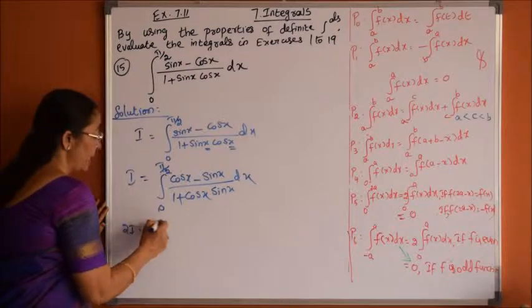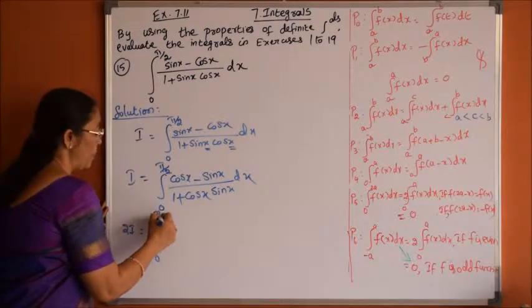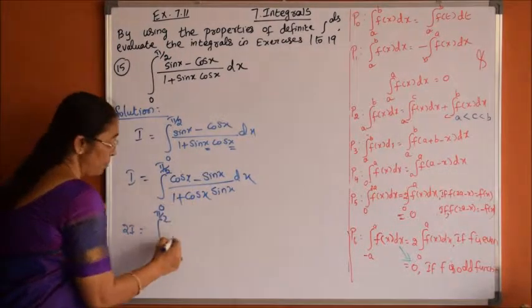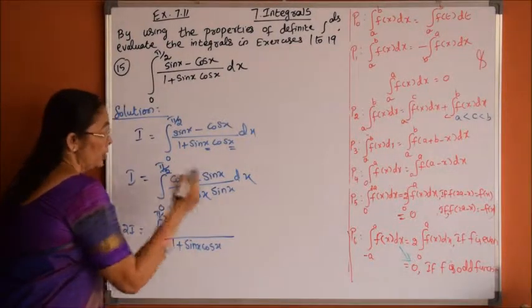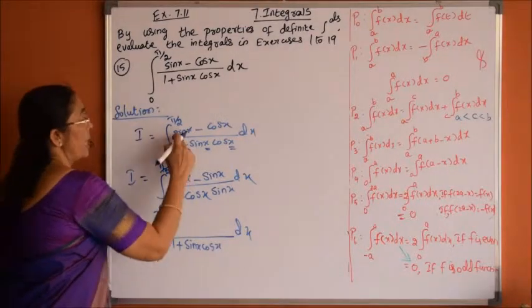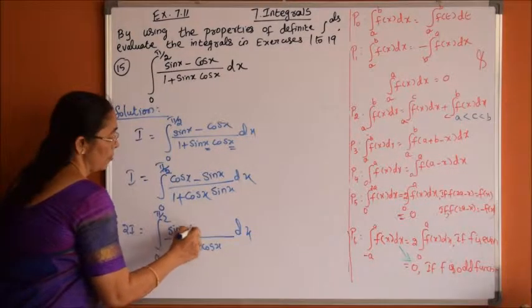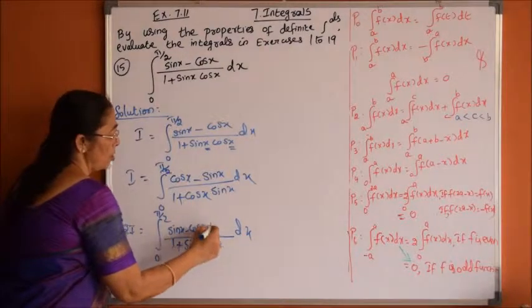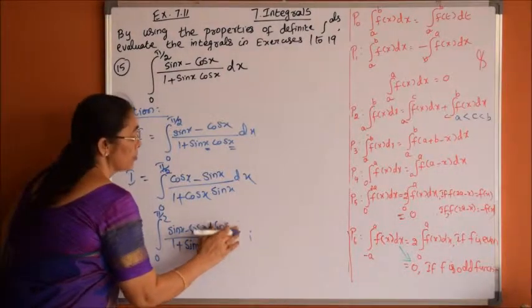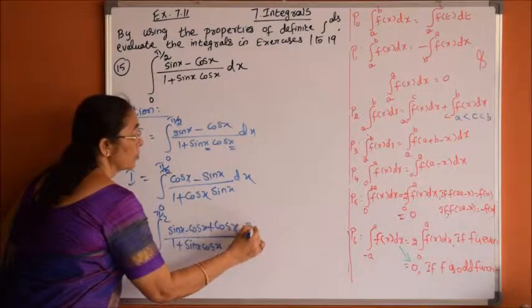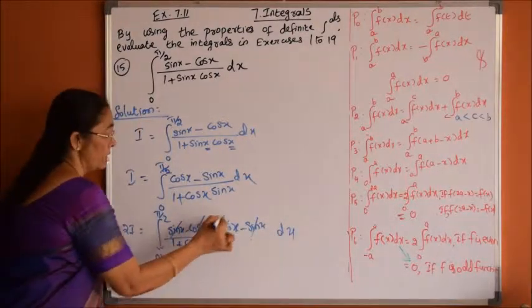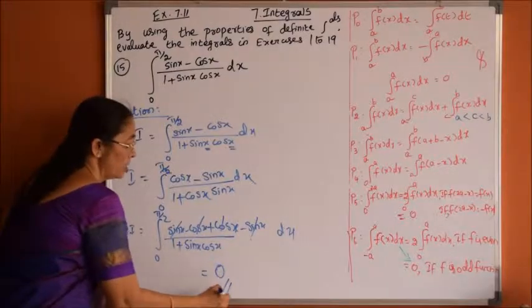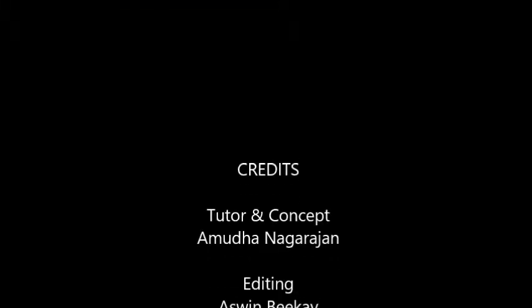Adding the two expressions, 2I equals the integral from 0 to pi by 2 with common denominator 1 plus sin x into cos x, and the numerator is (sin x minus cos x) plus (cos x minus sin x) dx. The sin x terms cancel and the cos x terms cancel, giving numerator 0. Therefore 2I equals 0, so I equals 0.